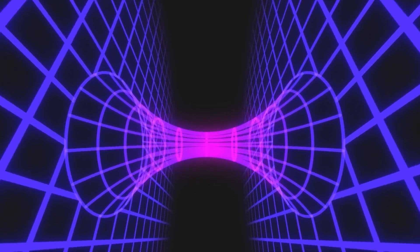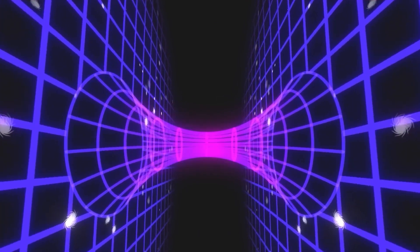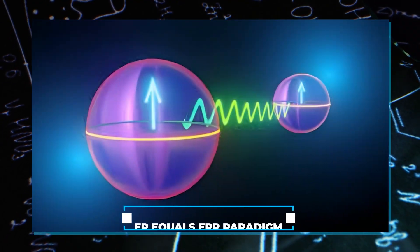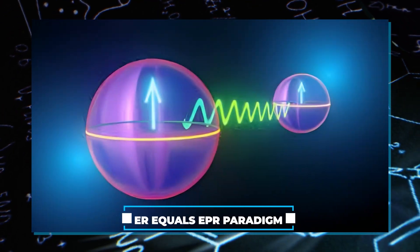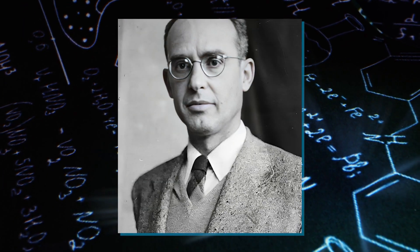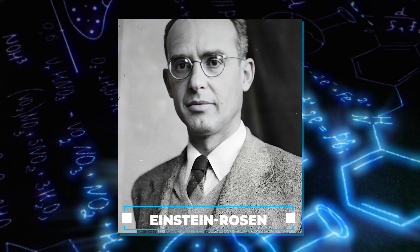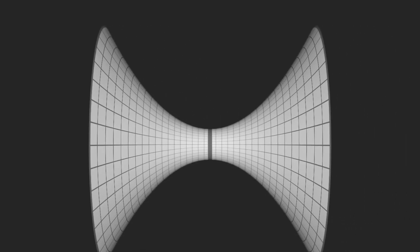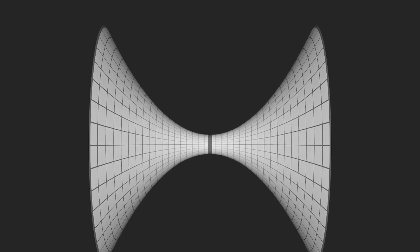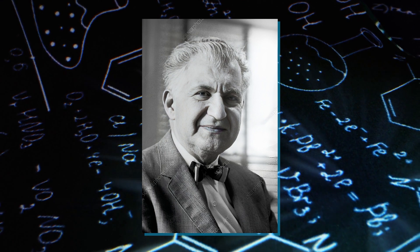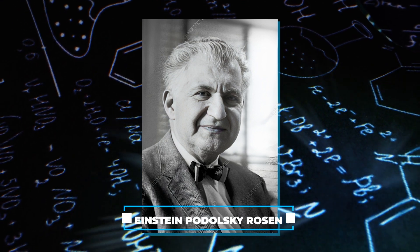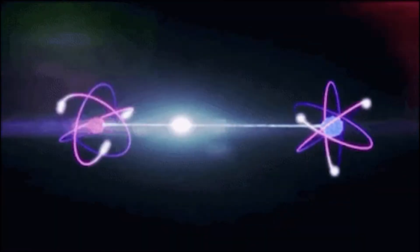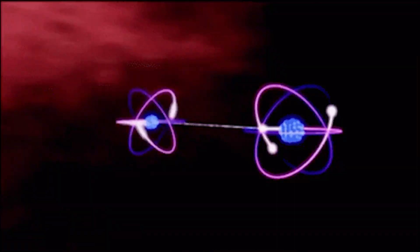Nevertheless, it's worth noting that wormholes are gaining significant popularity in what is known as the ER equals EPR paradigm. The term ER refers to Einstein-Rosen, a concept dating back to the 1930s, when Einstein and Rosen observed the potential existence of certain geometries in space-time. The EPR in the paradigm stands for Einstein-Podolsky-Rosen, specifically representing quantum entanglement or spooky action at a distance.